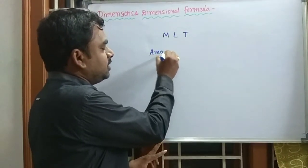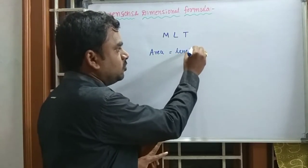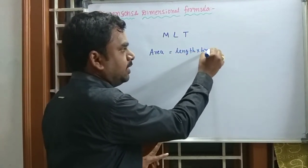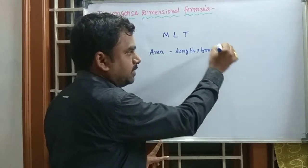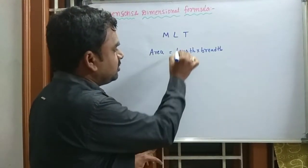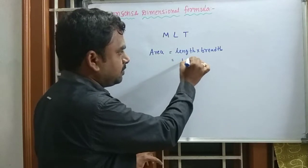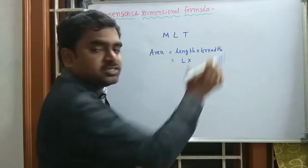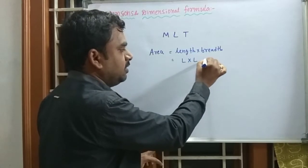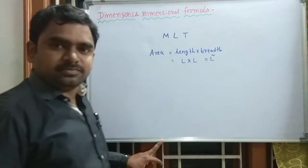For example, area: the formula for area is length into breadth. Length is represented by L, and breadth is also one type of length, so it is also L. Therefore, area equals L into L, which is L squared.